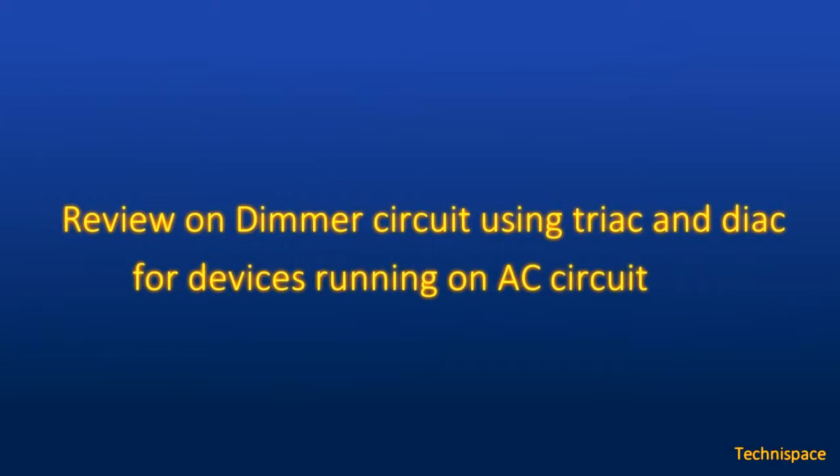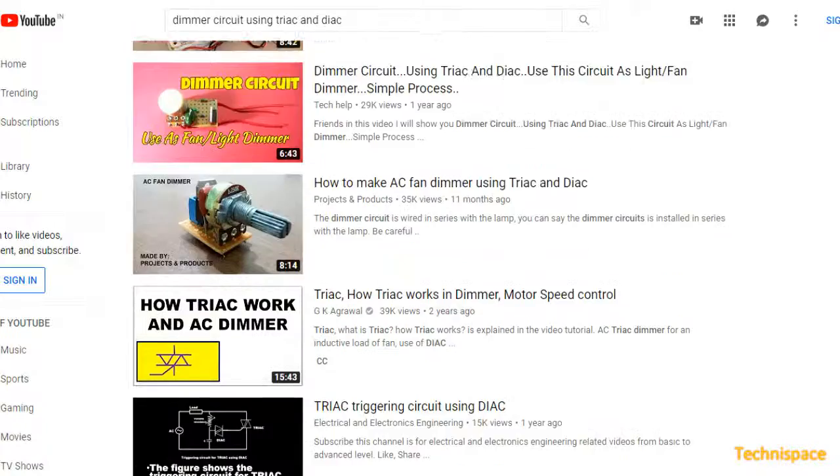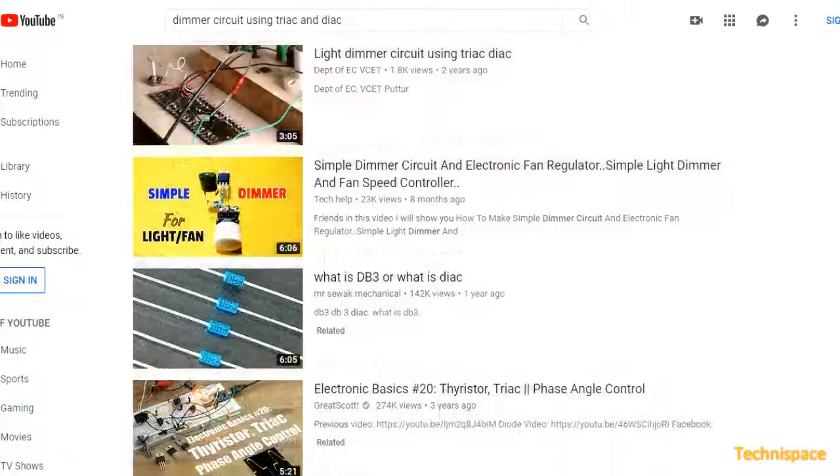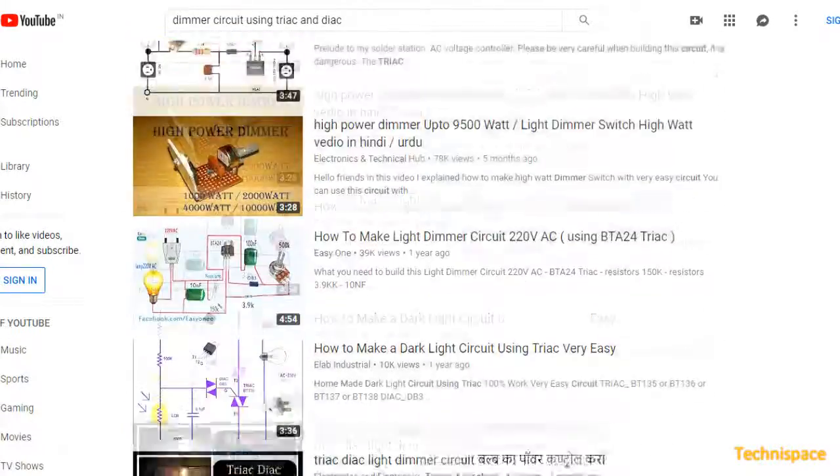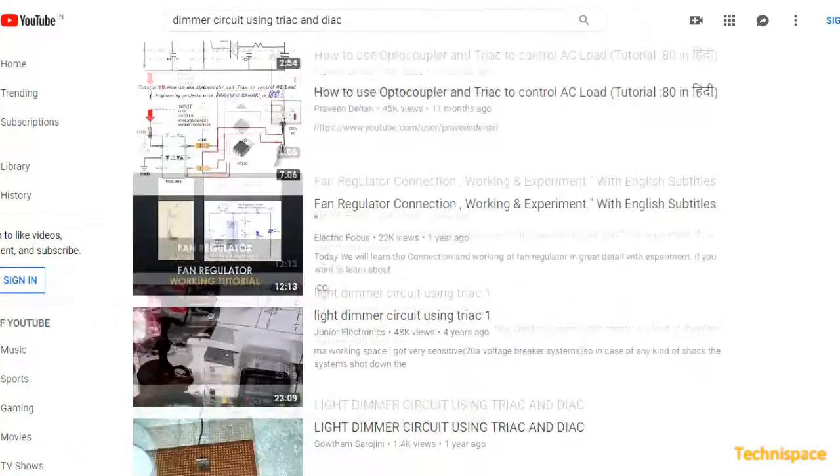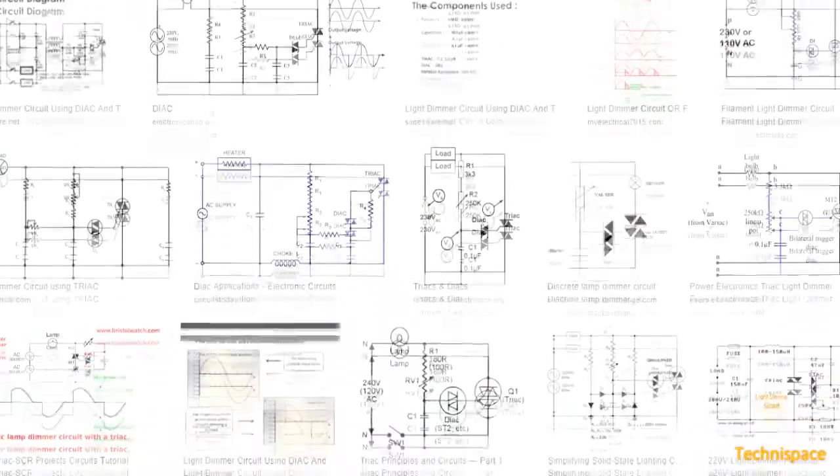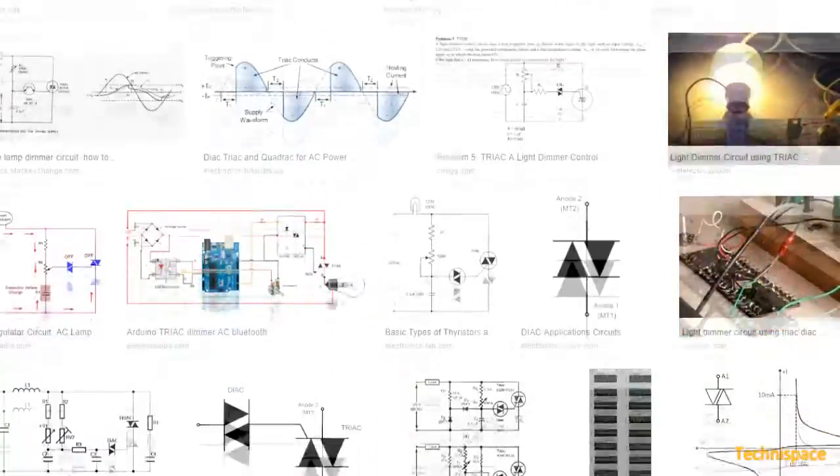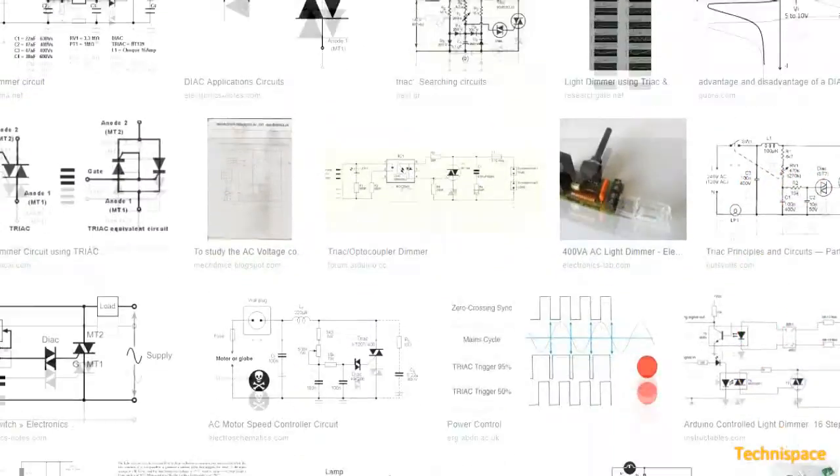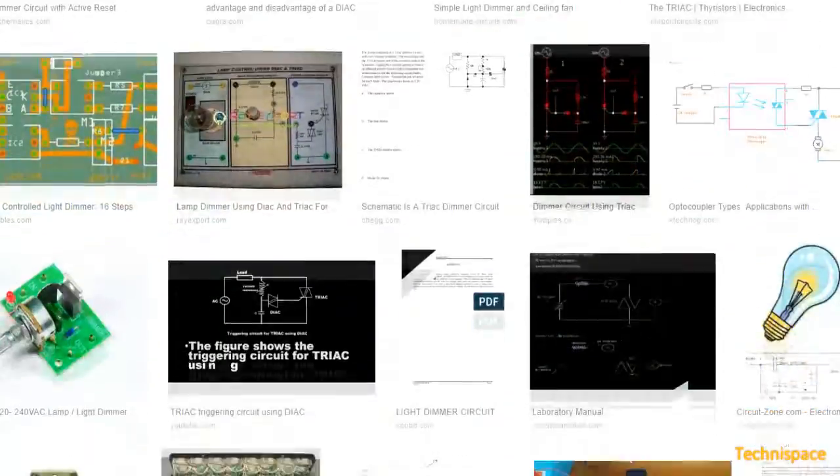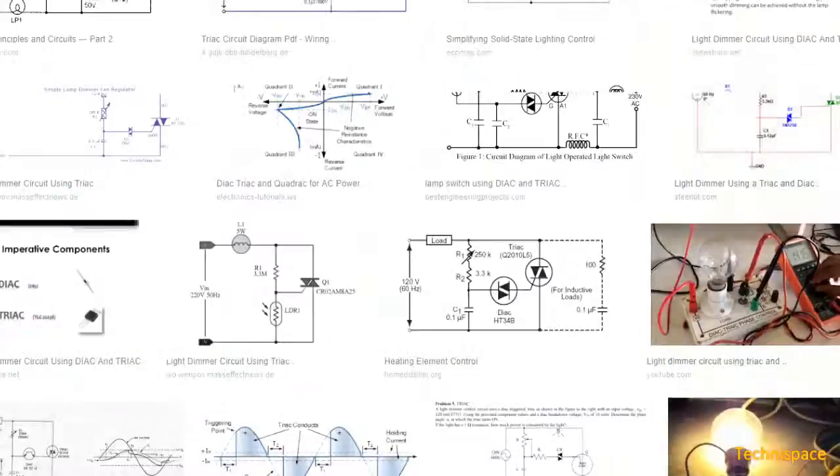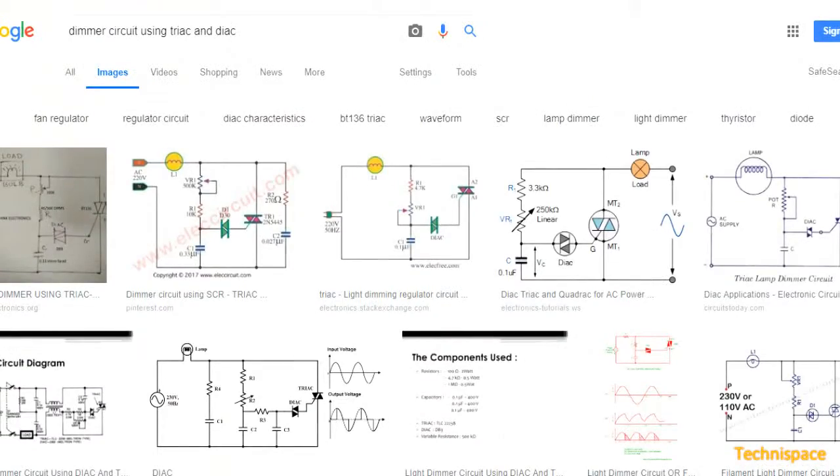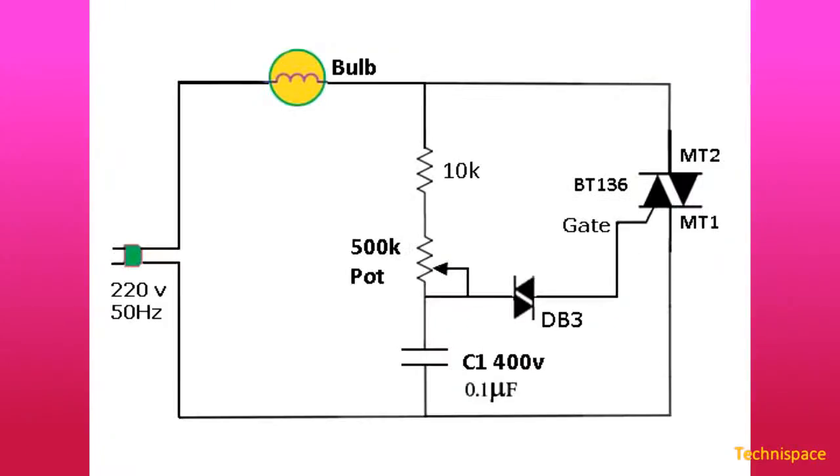today's video will be review on dimmer circuit using TRIAC and DIAC. As I can see there are a lot of videos on this circuit, and I wanted a regulator especially for fan, so I wanted to try out this simple circuit, best suitable and efficient. I saw a lot of circuit diagrams on internet and YouTube, somewhat similar with some differences in resistors and potentiometers from 100k to 500k, and with additional resistors and capacitors in circuit.